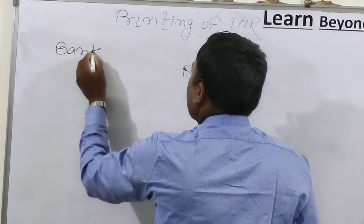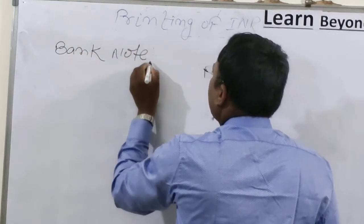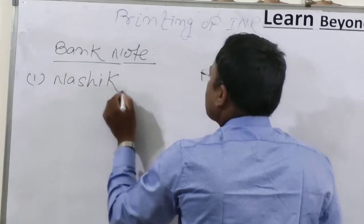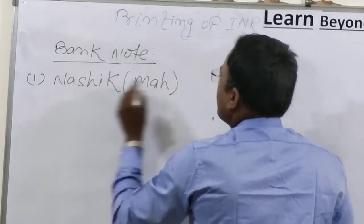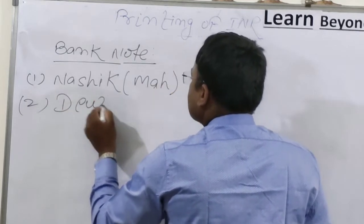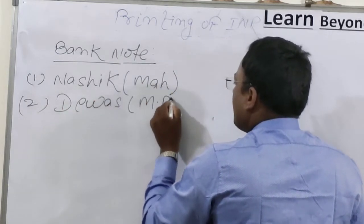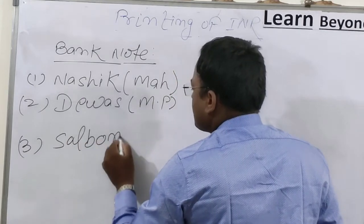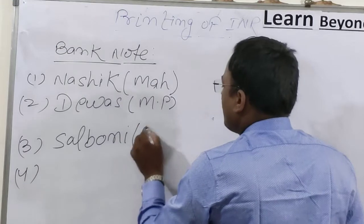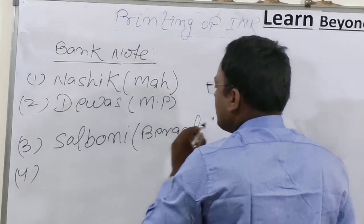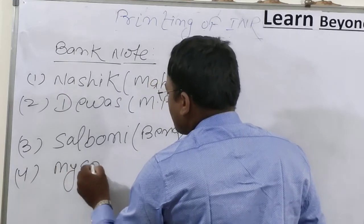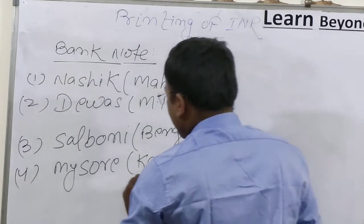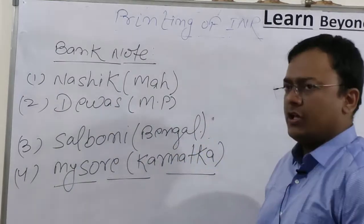Bank notes are printed at four places. First is Nashik, which is in Maharashtra. Second is Dewas, which is in Madhya Pradesh. Third is Salboni, which is in West Bengal. Fourth is Mysore, which is in Karnataka. These are the four places where bank notes are printed in India.